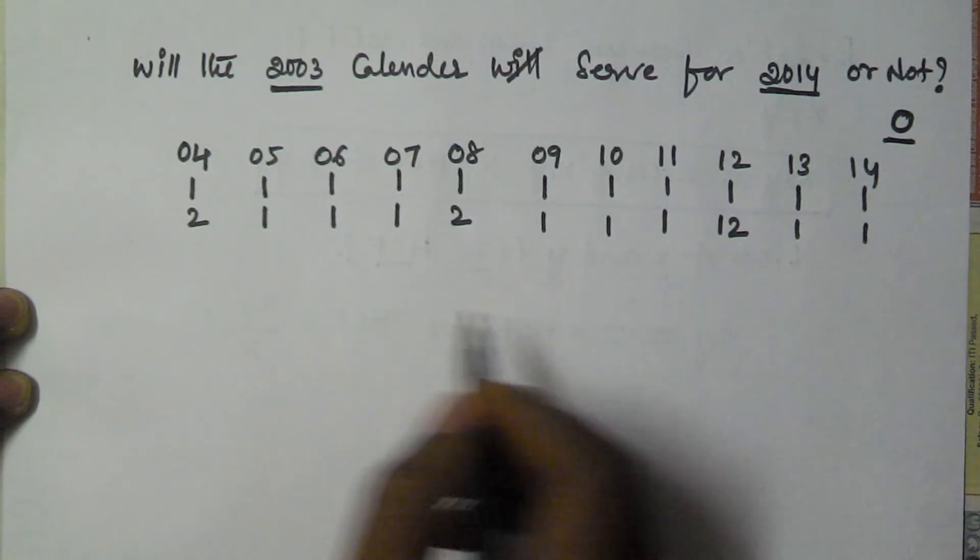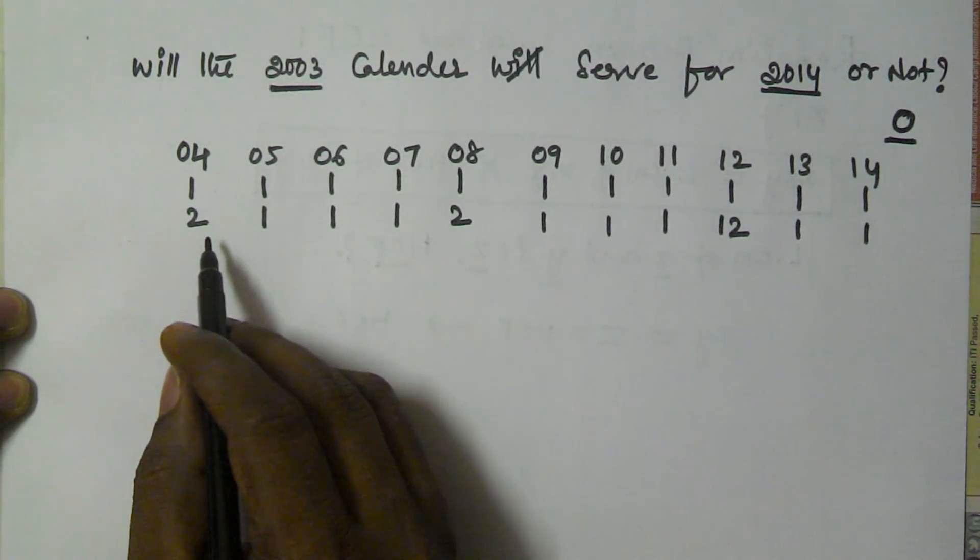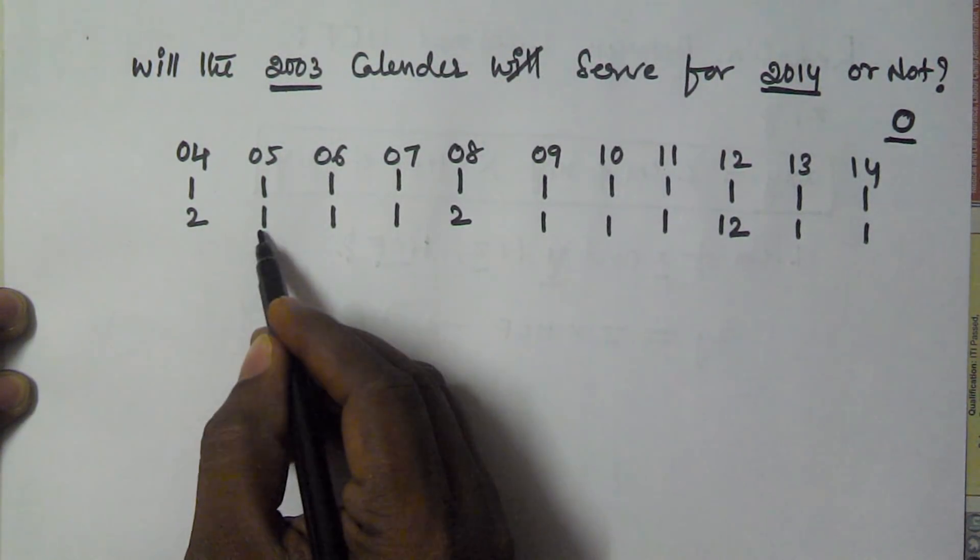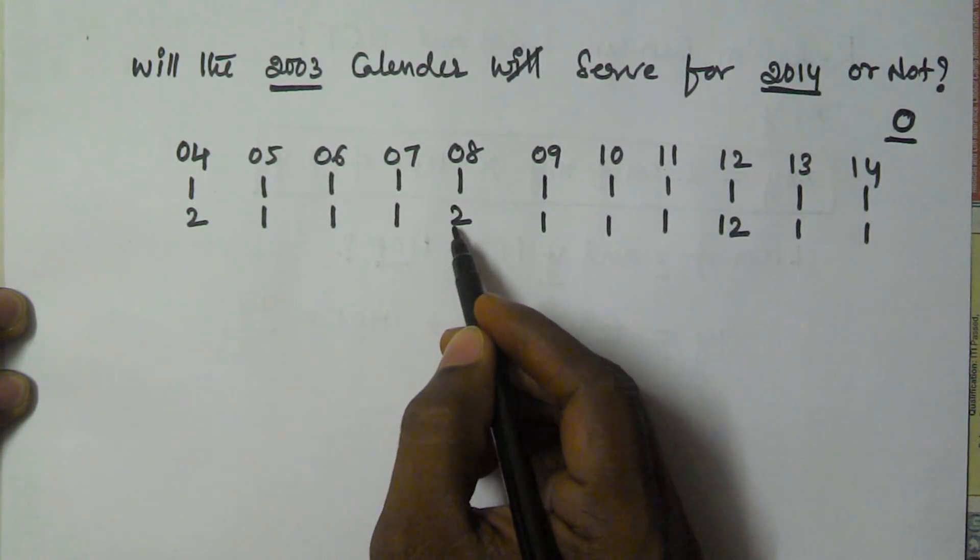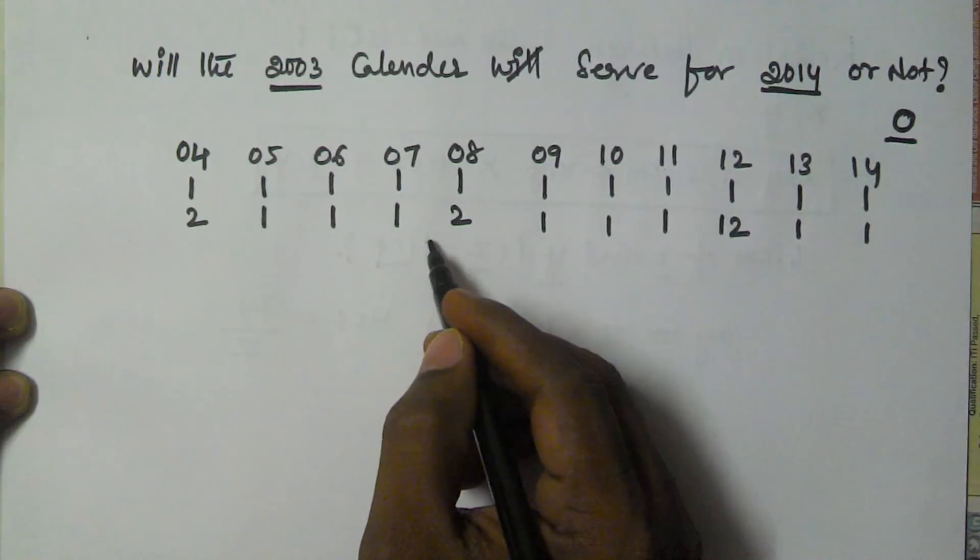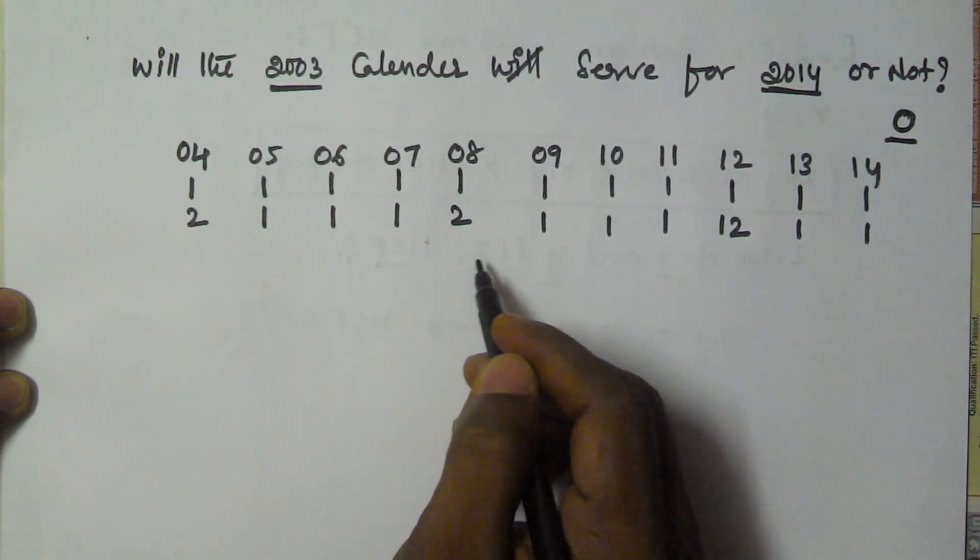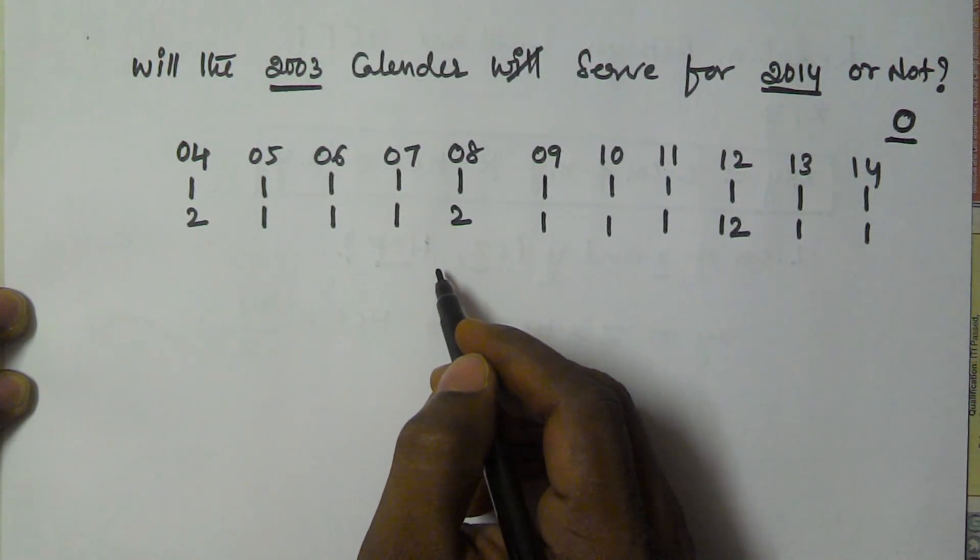Now add all the odd days: 2 plus 1, 3, 4, 5, 6, 7. Whenever we achieve 7 or 14, we have to divide by 7 and take the remainder.